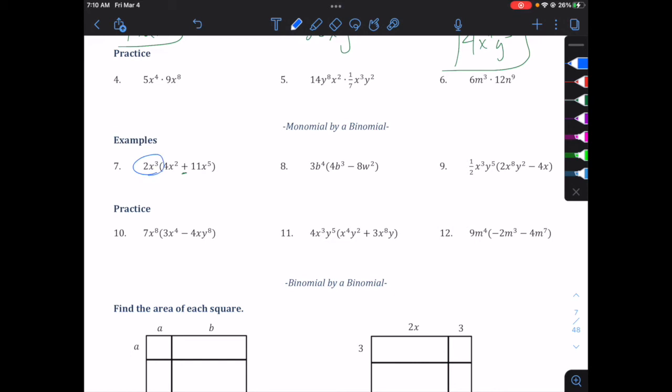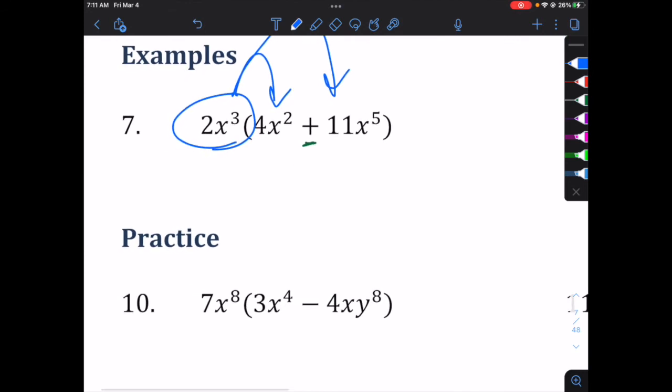The monomial is going to multiply by each of the terms inside the parentheses, each of the pieces of the binomial. It's just like the monomial examples we did above, except we get to do two of them in one problem. So we're going to take the 2x cubed times the 4x squared first.